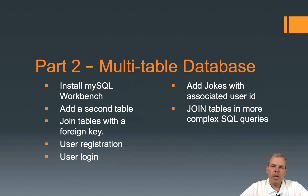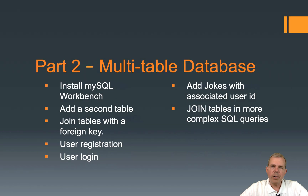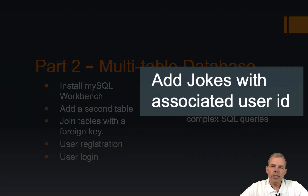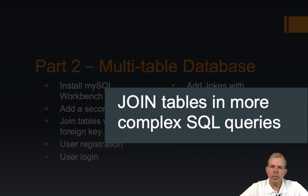After we have our database set up to handle users, we'll create a registration form and a login form in our application. Once we can log in, every time we add a joke we can assign an author's name to it, so the owner is the person who logged in and registered the joke. And when we display the jokes we want to show the author's name, which will require us to learn how to do joins.